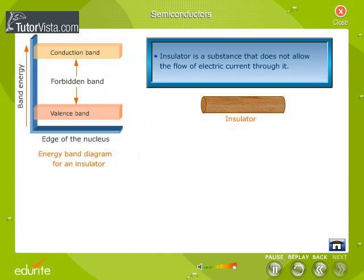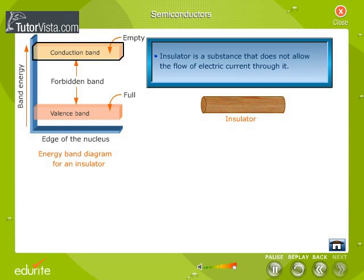Insulator is a substance that does not allow the flow of electric current through it. In terms of energy band, the valence band is full while the conduction band is empty. Moreover, the energy gap between the valence and conduction bands is very large, as shown in the figure. As a result, a high electric field is needed to push valence electrons into the conduction band, and electrical conductivity of such materials is extremely small and can be regarded as negligible under normal conditions.